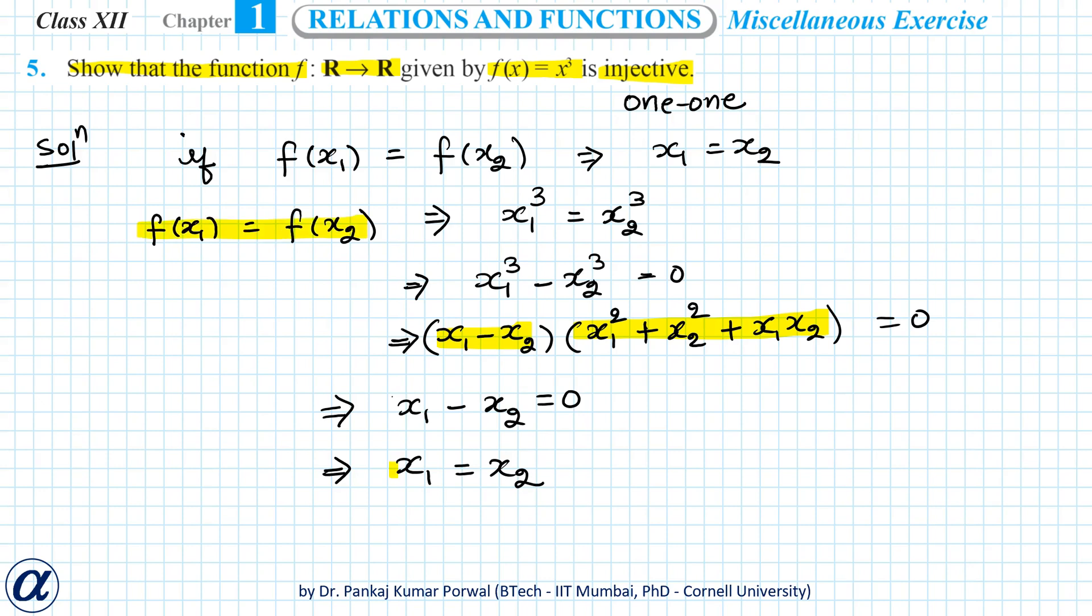So if we assume that f(x₁) equals f(x₂), then we can show that x₁ equals x₂ whenever f(x) is x³. So our function f(x) is one-to-one, that is our function f(x) is injective.